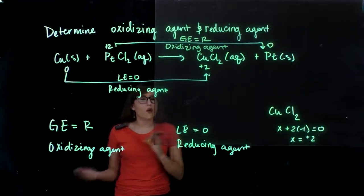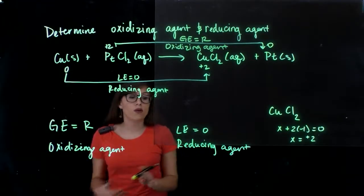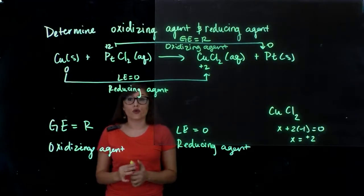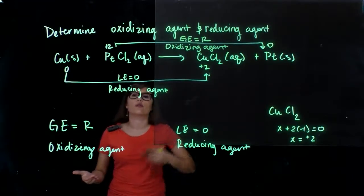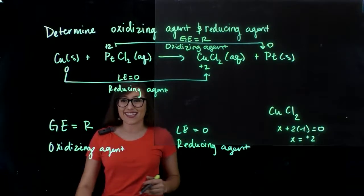Remember when you approach this problem, I highly suggest that you write out GER and LEO. This will give you a helpful tool to determine what is being reduced and what is being oxidized, and thus what are your reducing and oxidizing agents. Thank you.